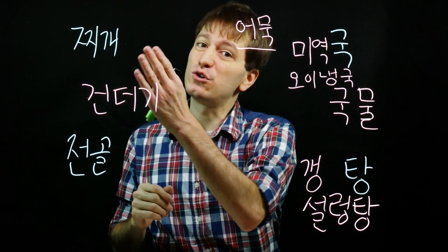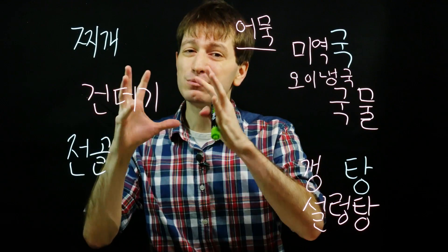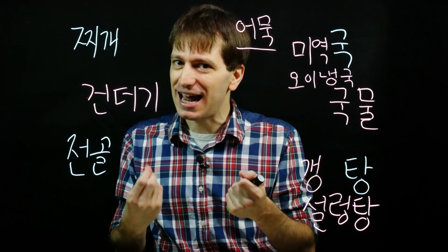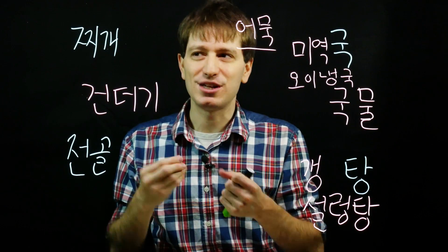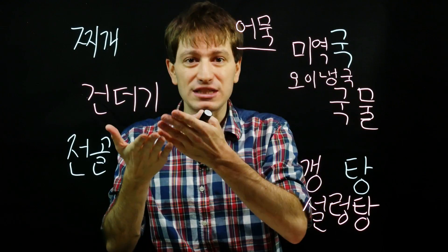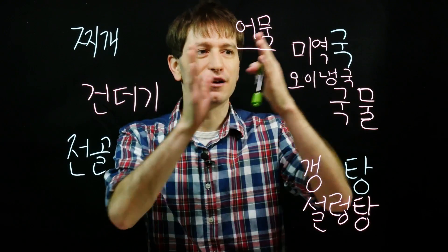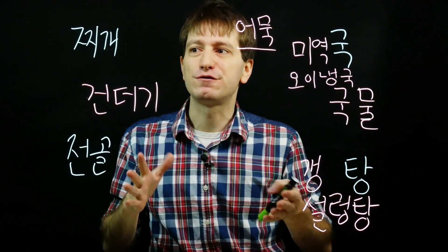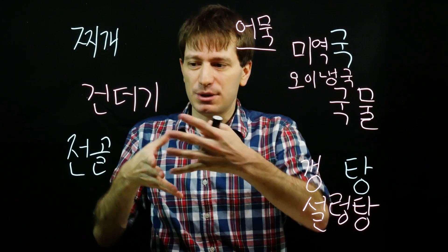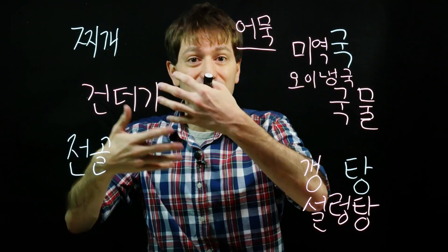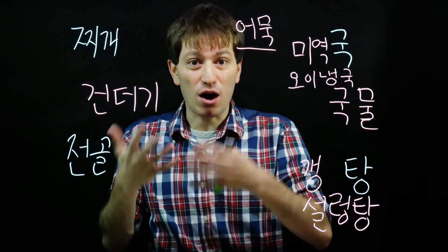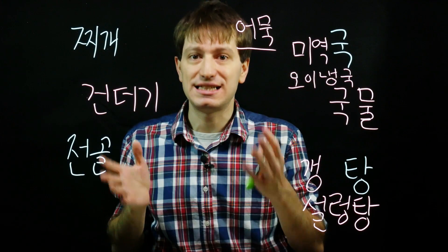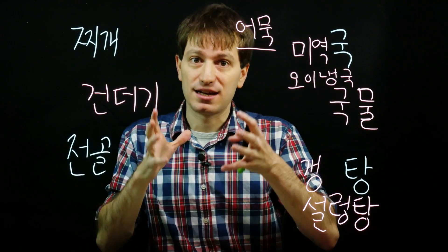And then there's 찌개, which compared to 국 has much more ingredients. It's much thicker and saltier. You can think of 찌개 as a more salty and thicker version of regular 국. For example, you might have 김치찌개, which is focused on the 김치 inside and contains a lot of ingredients with a much thicker broth that's been reduced more. Or you can have 된장찌개, which also has more of a thick broth.